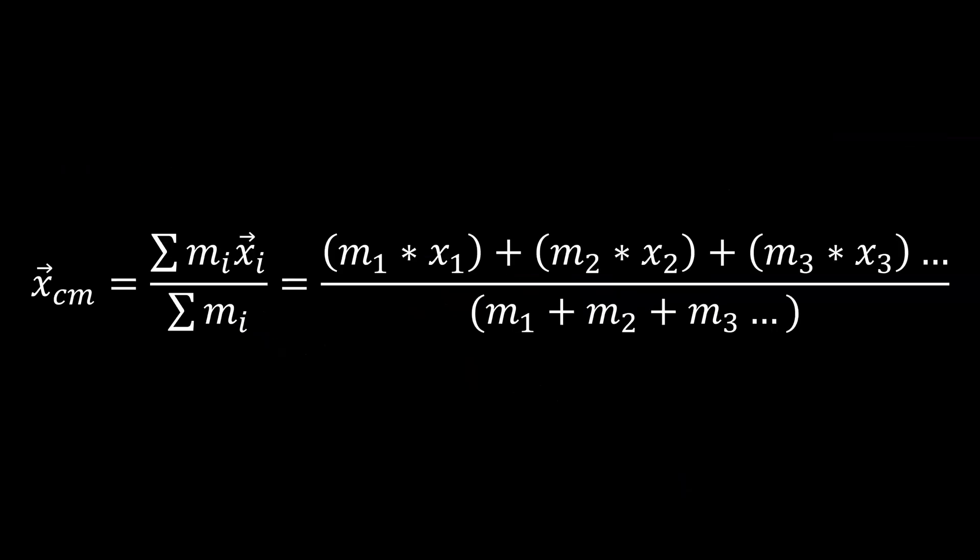It usually ends up looking something like this. Finding the center of mass is important because we will often model a system of multiple objects as a single object that's located at the system's center of mass.